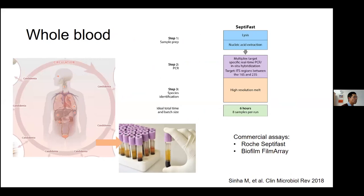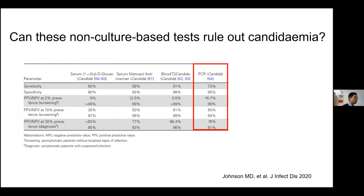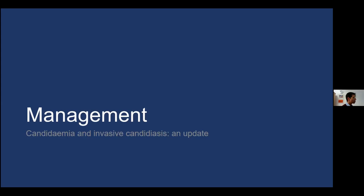PCR is another method. There are two commercial assays: the Roche SeptiFast and the BioFire FilmArray. PCR is not more sensitive than blood culture but does reduce turnaround time. Here is the sensitivity and specificity for PCR with some of these commercial assays.